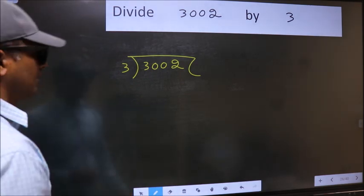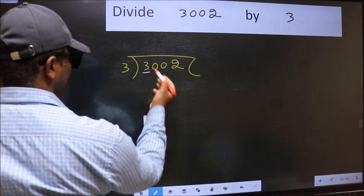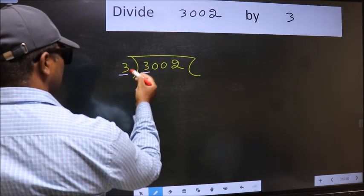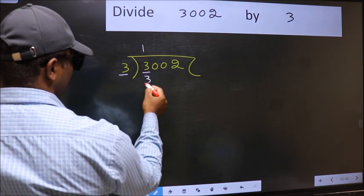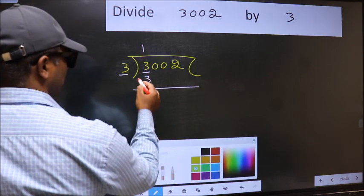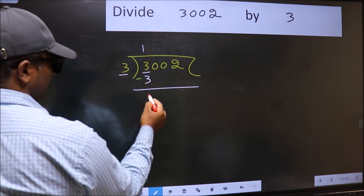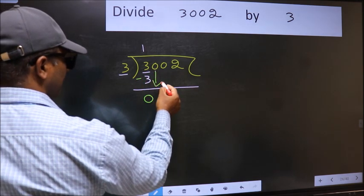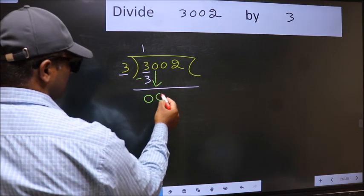Next, here we have 3 and here also 3. When do we get 3 in the 3 table? 3 times 1 is 3. Now we should subtract: 3 minus 3 equals 0. After this, bring down the beside number, so 0 down.